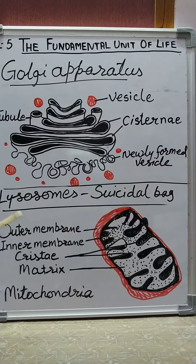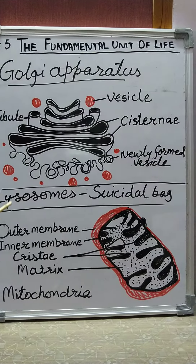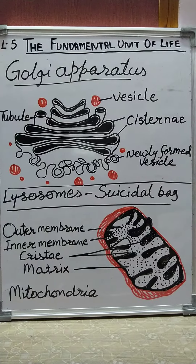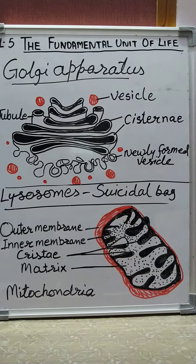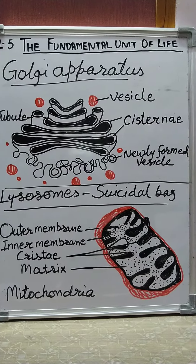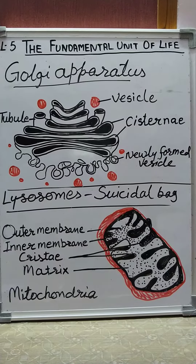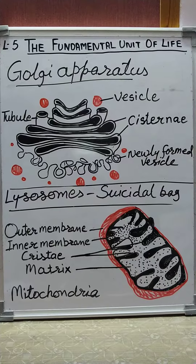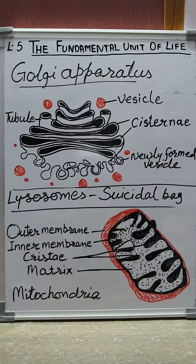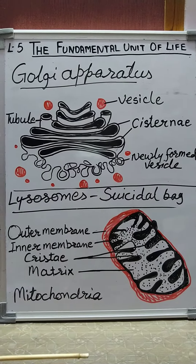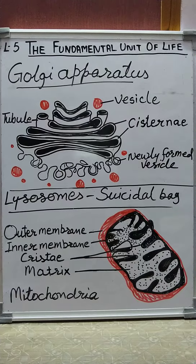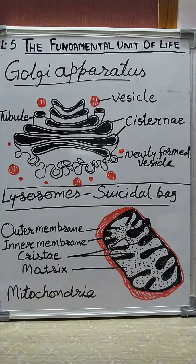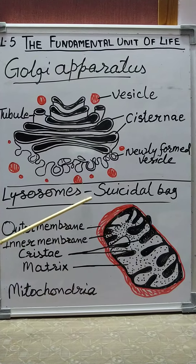The next cell organelle is lysosomes. The membrane of a lysosome is made up of lipids and proteins, and it contains enzymes. The main function of the lysosome is digestion, and because it digests the living parts of the cell, it is also called the suicidal bag.